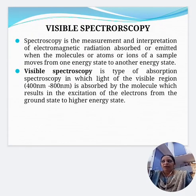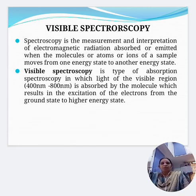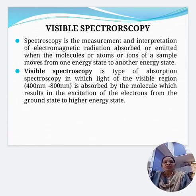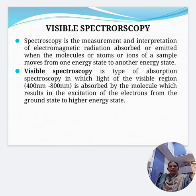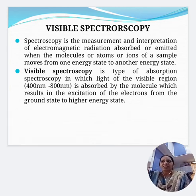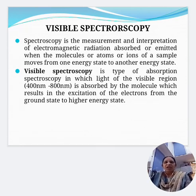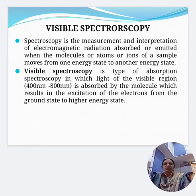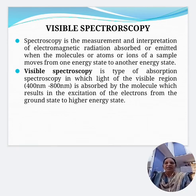Visible spectroscopy: spectroscopy is the measurement and interpretation of electromagnetic radiation absorbed or emitted when molecules, atoms, or ions of a sample move from one energy state to another energy state. Visible spectroscopy is a type of absorption spectroscopy in which light of the visible region, ranging from 400 nanometers to 800 nanometers, is absorbed by the molecules, resulting in the excitation of electrons from the ground state to a higher energy state.